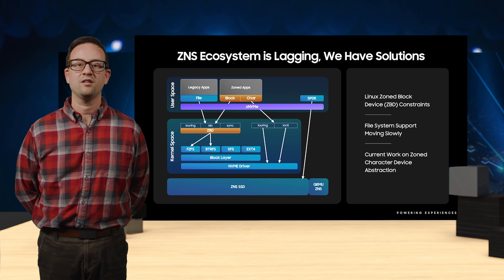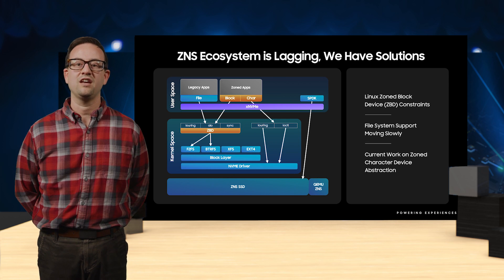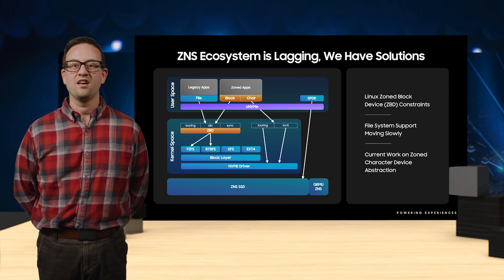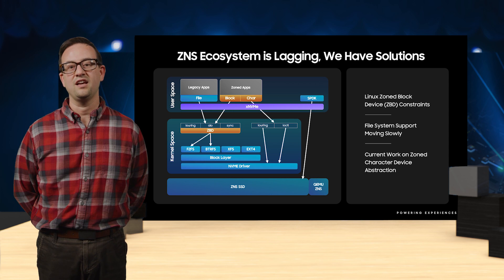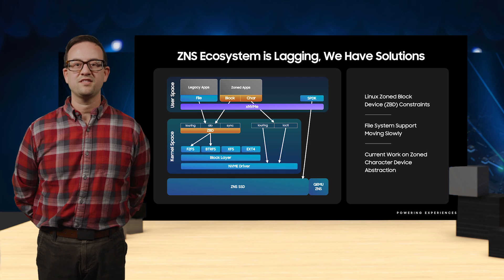To address some of the issues with lagging upstream ecosystem support, we are working on the zone character device abstraction, which exposes a character device as a direct path to the NVMe driver managing the ZNS SSD. This pathway is not dependent on the features required for a zoned block device. We are currently building a fast asynchronous pathway to the device driver leveraging a new high-performance asynchronous Linux kernel API, IOU ring. When leveraging our NVMe character device plumbing, this interface can be seen as an alternative to a user space NVMe driver such as SPDK.